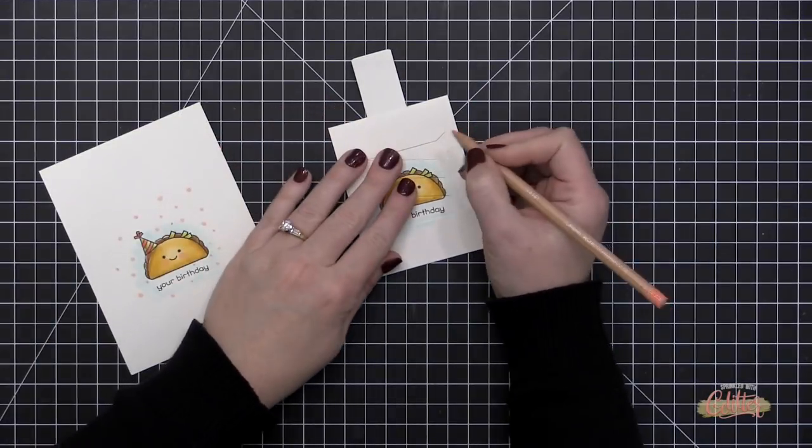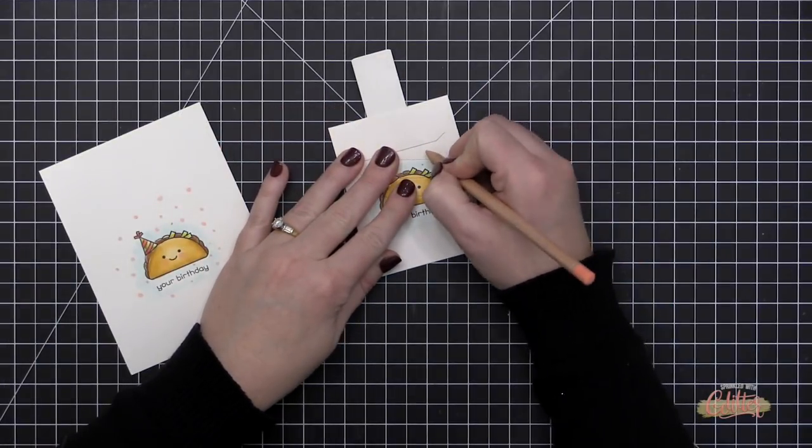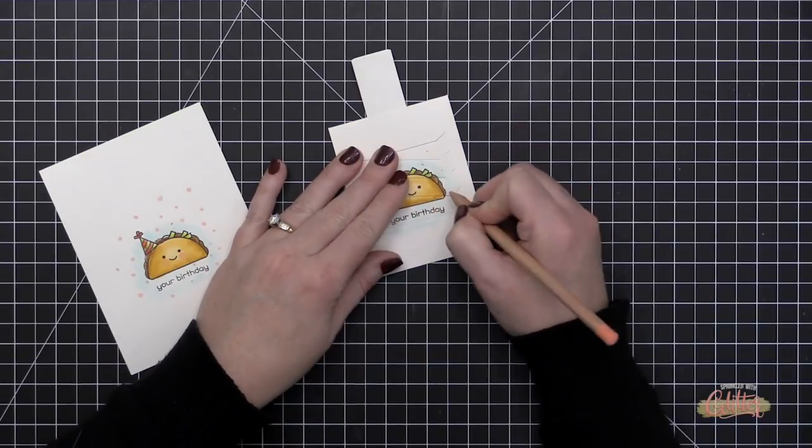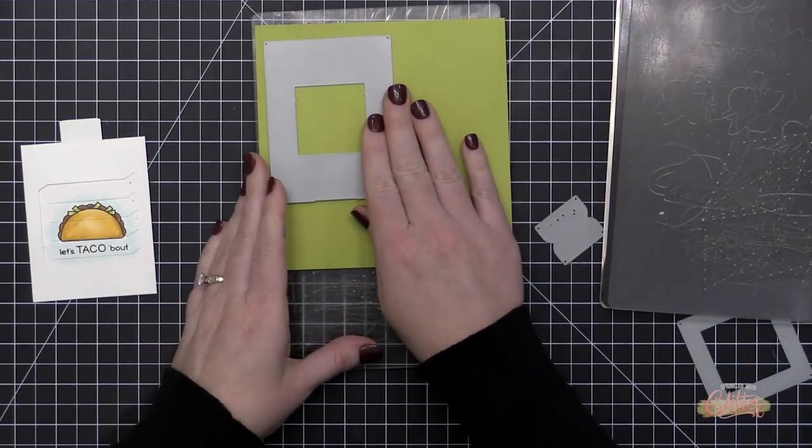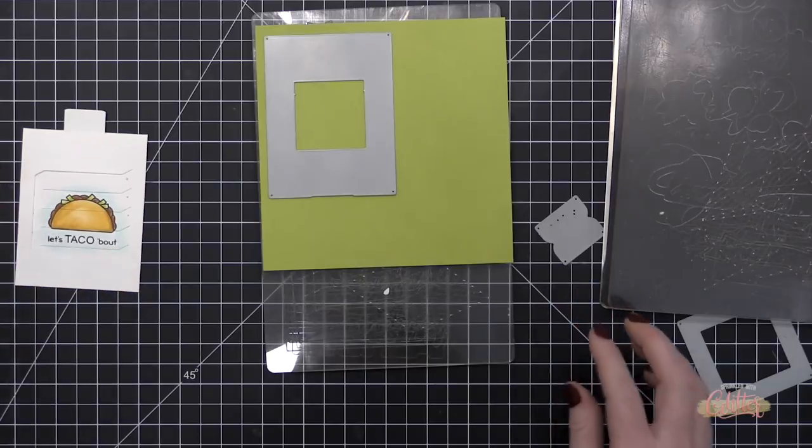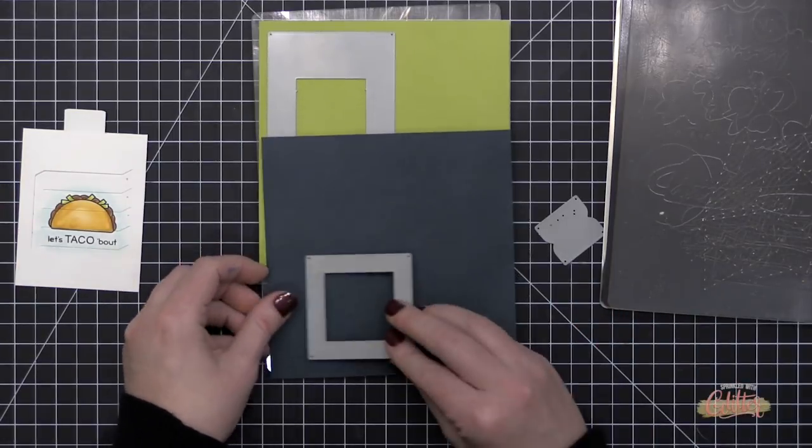I wanted to add some confetti to the little party taco but I forgot to do that before I die cut it, so I just took a colored pencil and drew some confetti on the inside of that scene.